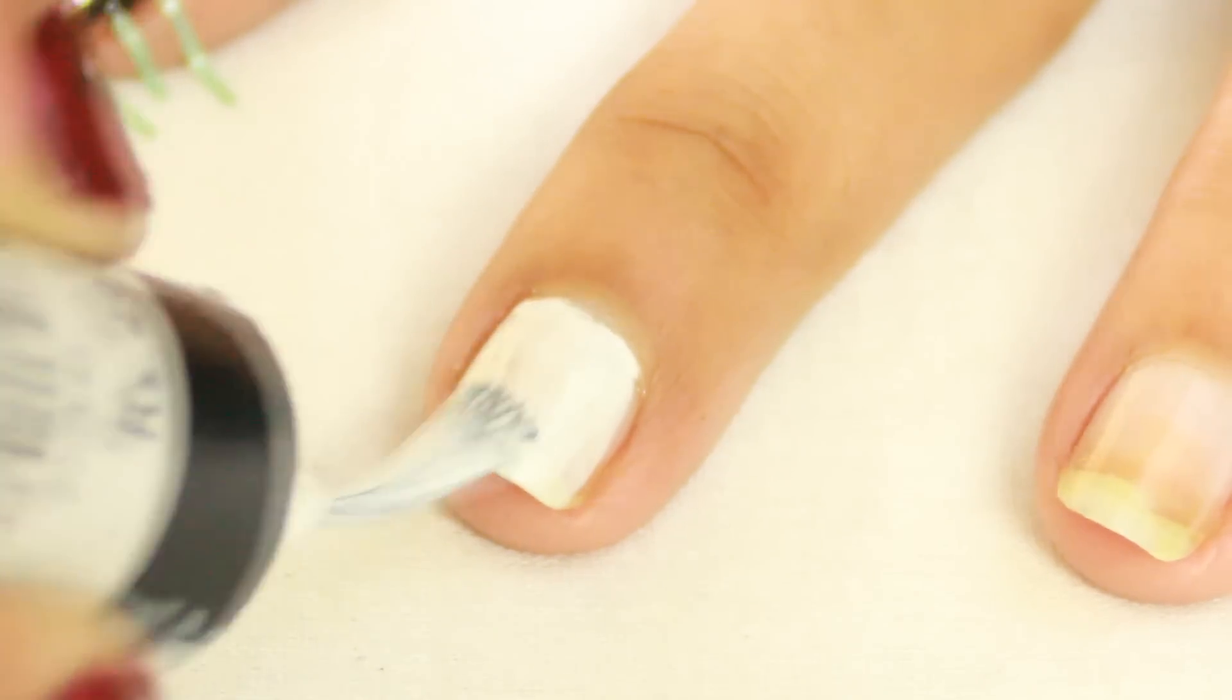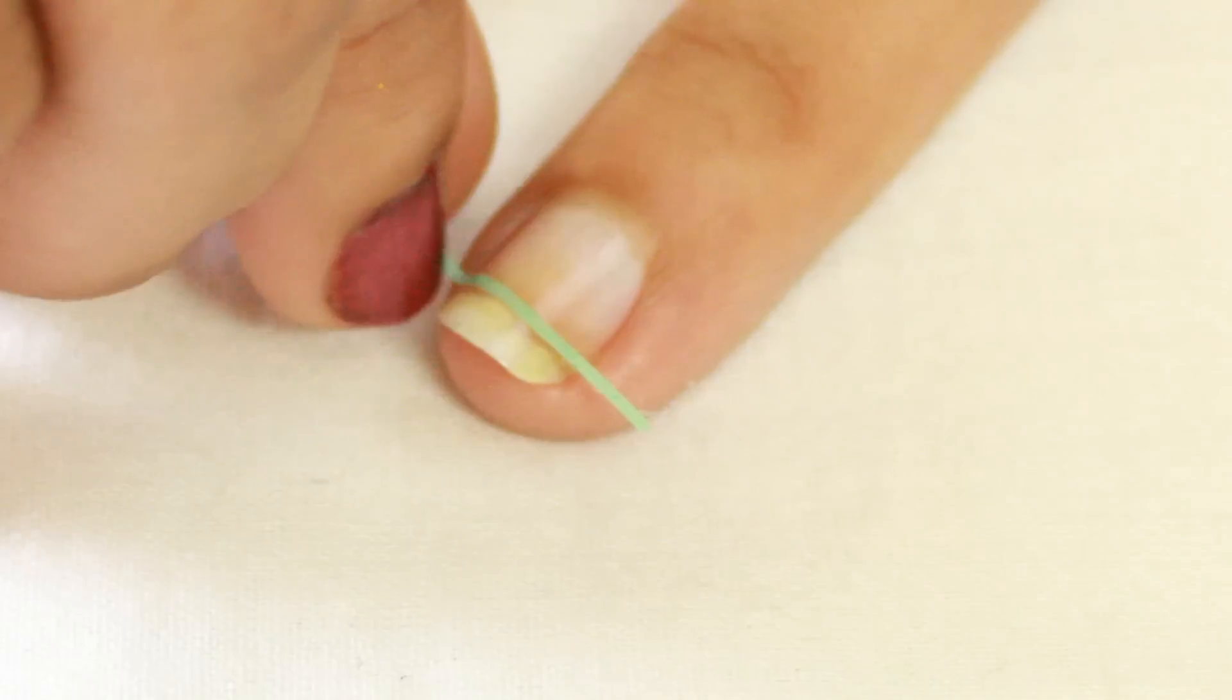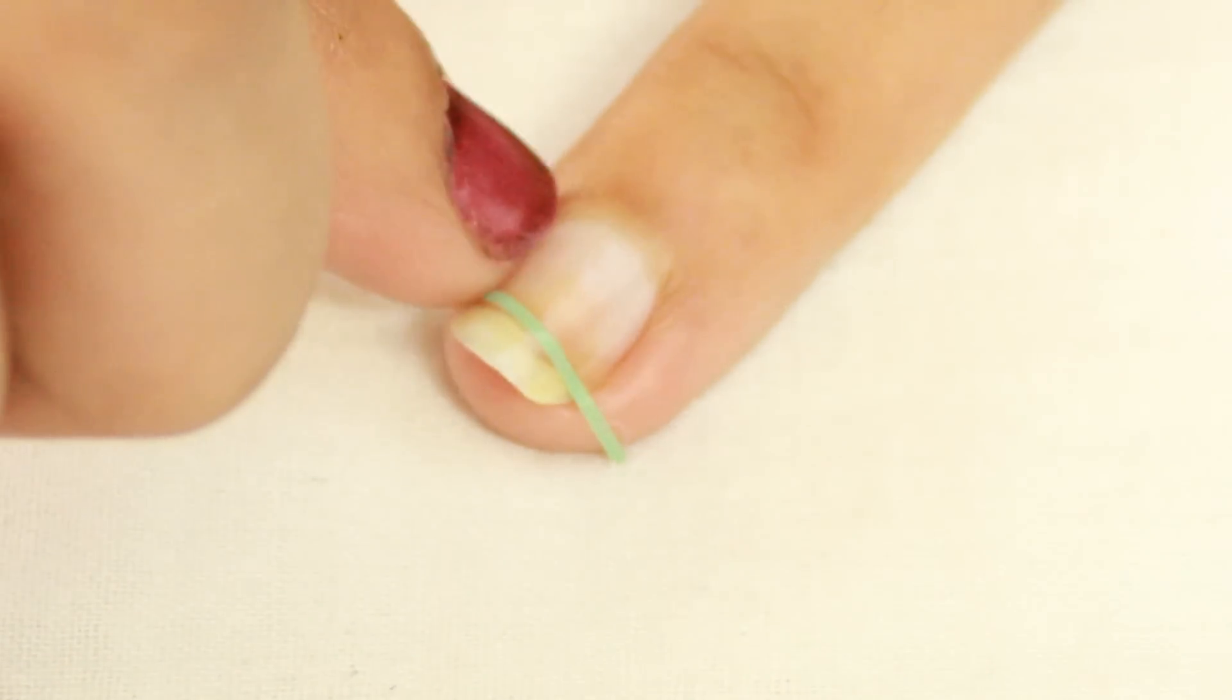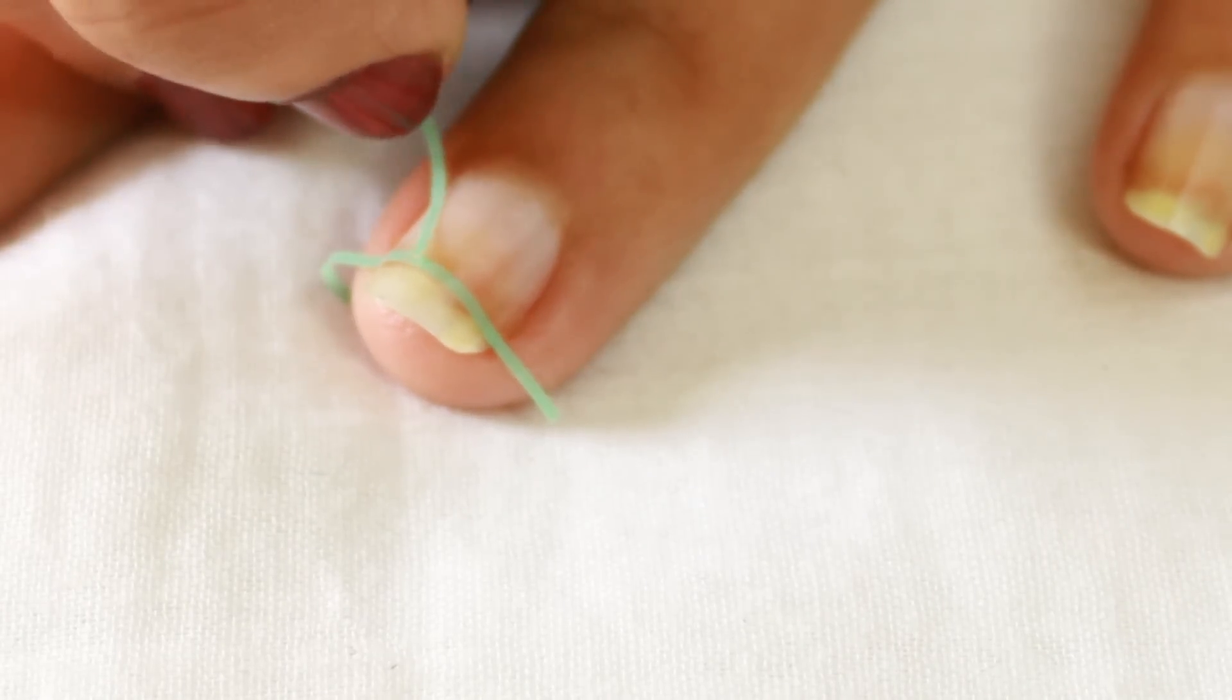On the ring finger, apply striping tape horizontally and now place two striping tapes in the shape of a V.